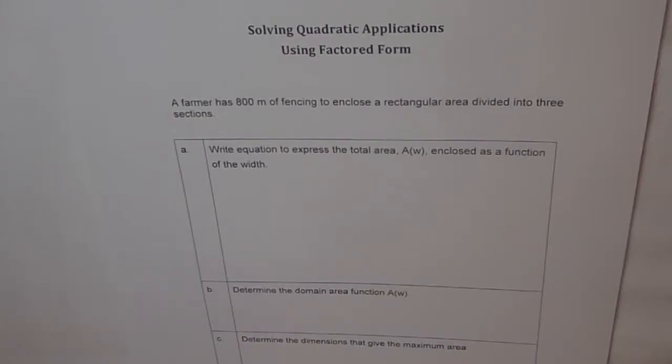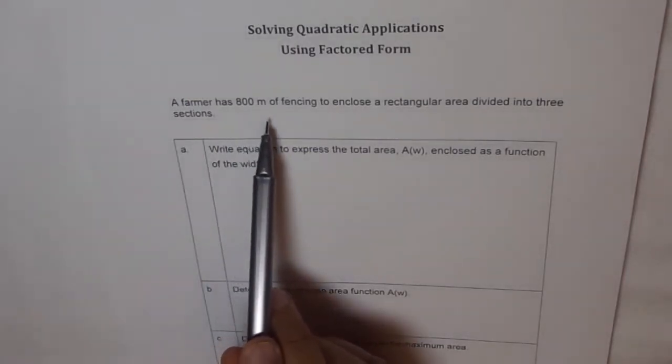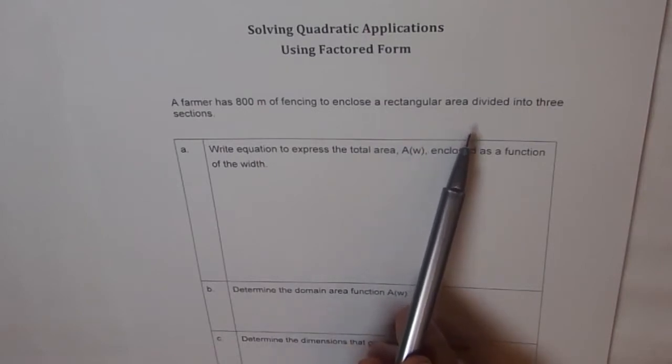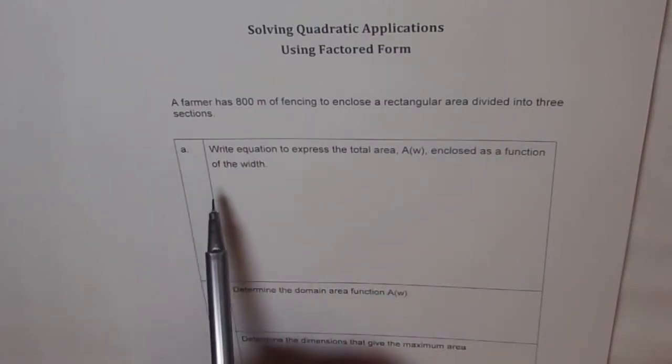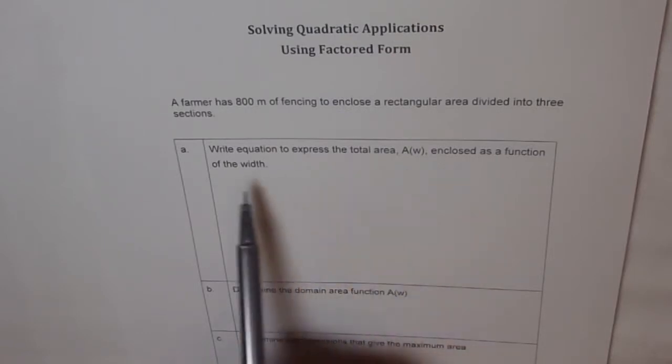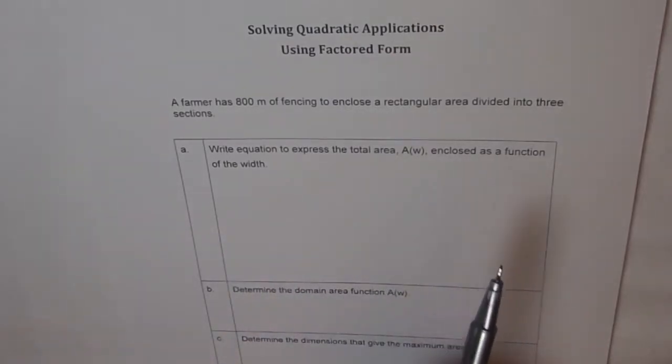Hi, this is another problem on quadratic application. We will have many of these kinds. The question says a farmer has 800 meters of fencing to enclose a rectangular area divided into three sections. We will find domain and range and then we will see the dimensions which are going to give us maximum area of the enclosure.